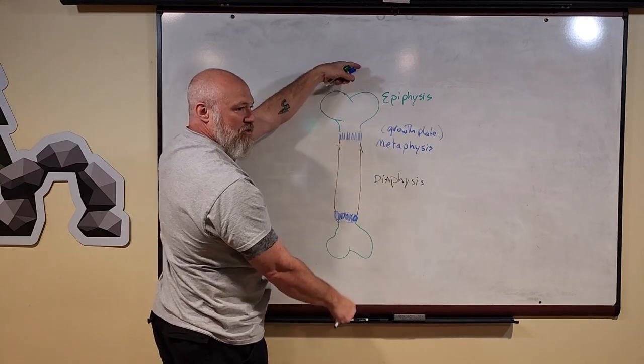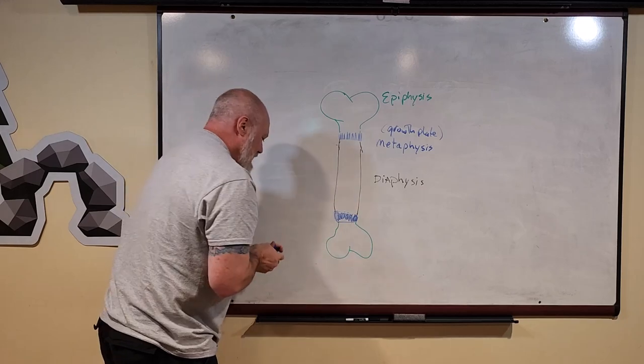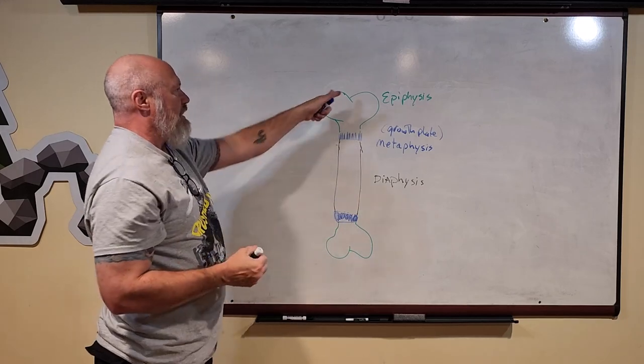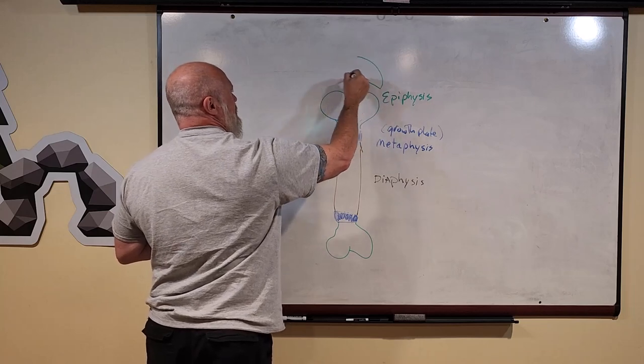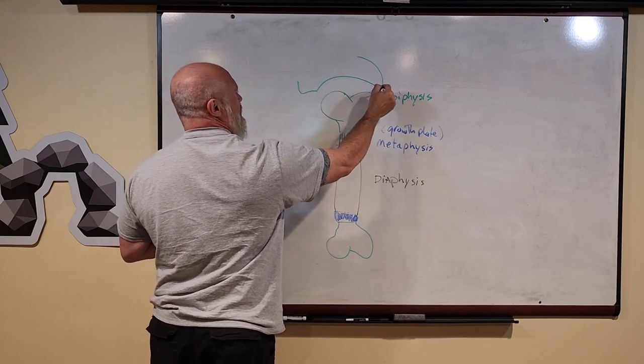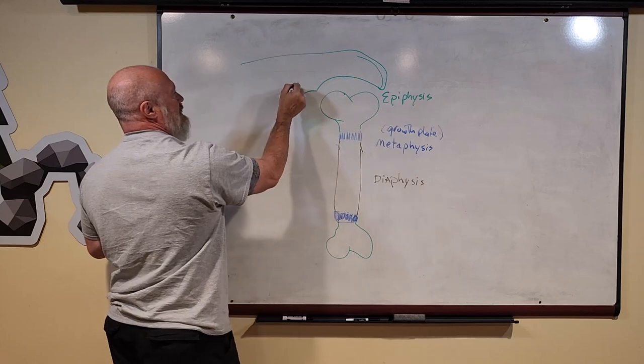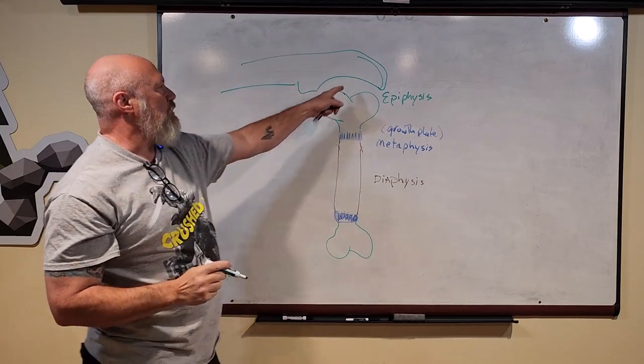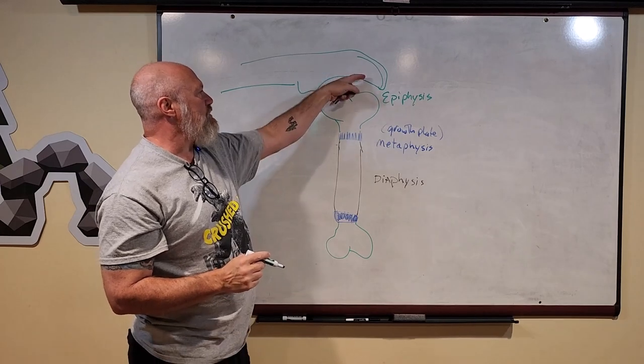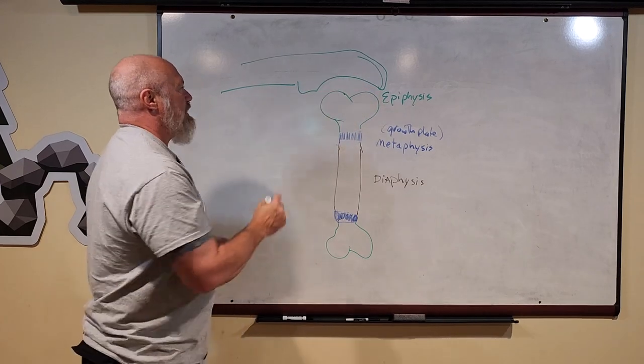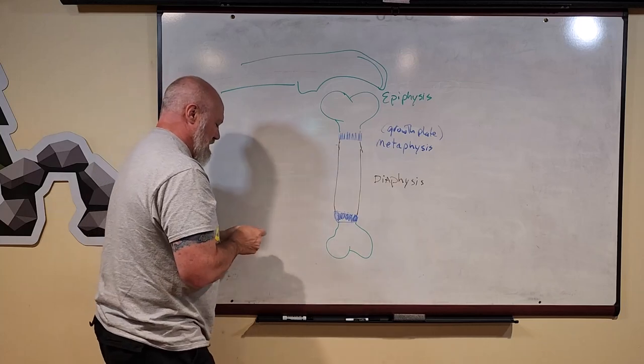Now the epiphysis of one bone will attach to the epiphysis on another bone—for instance, like an elbow joint. Where these two bones—this one's got a weird shape and this one's got a rounded shape—where they stick together is called the joint. Or that word we talked about earlier is articulation.